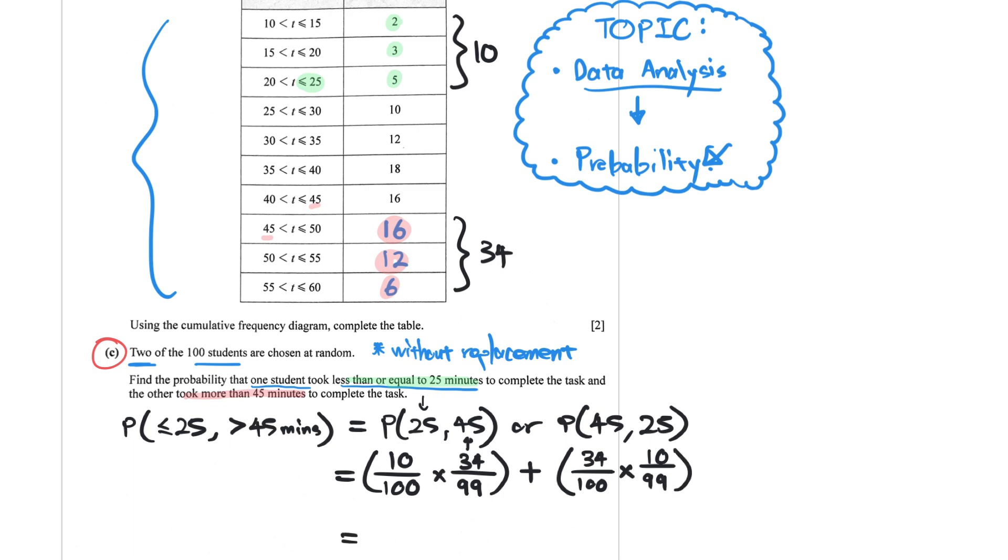So you could draw a tree and get these two outcomes and figure that out. Or by experience, if you write it out like this, it also can get you to the answer.